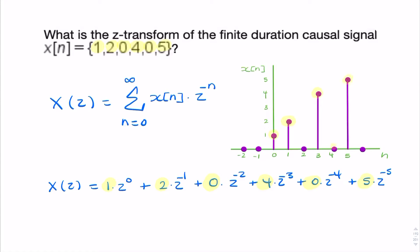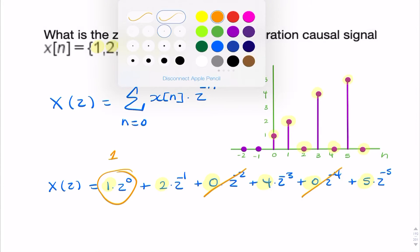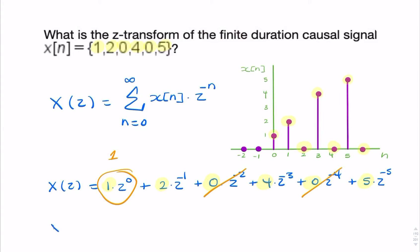here, starting from n equals 0. And we can cross out the 0, and this is simply 1. So our final answer will look something like this.